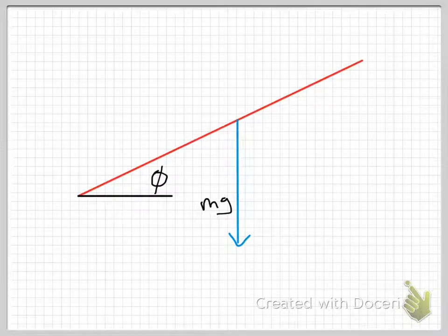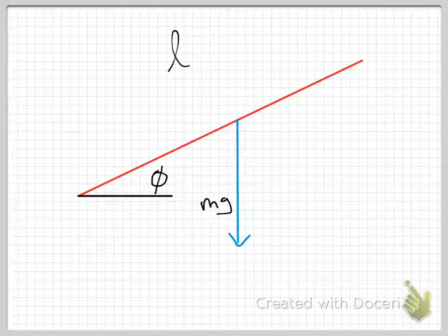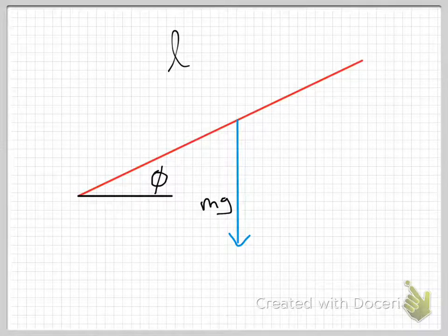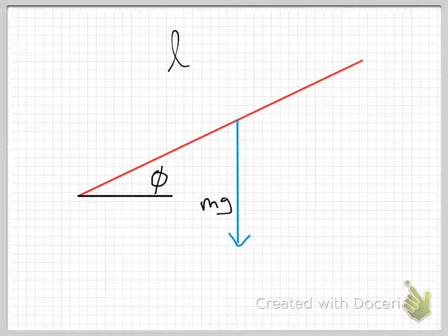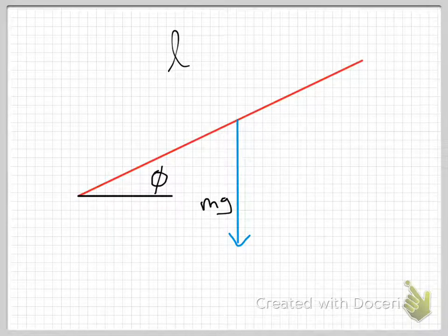So I have a rigid object which I put here in red, and we'll say that that's the total length of L. I've oriented it at some angle of phi with respect to the horizontal. And what I've done is I've gone ahead and drawn in the gravity vector. This is Mg, so this rod has a mass of M.